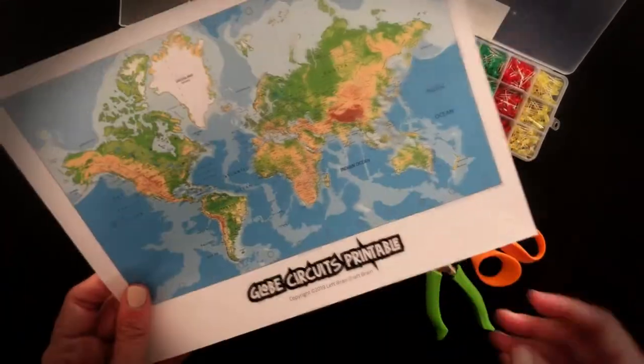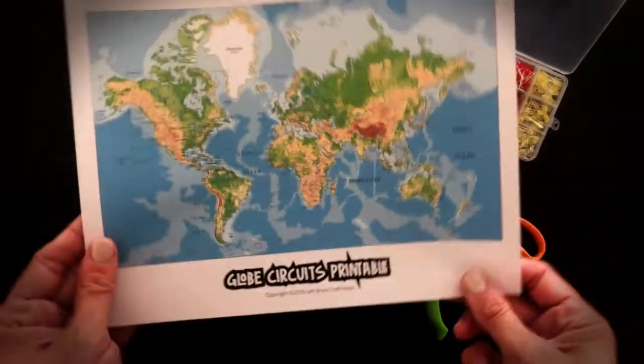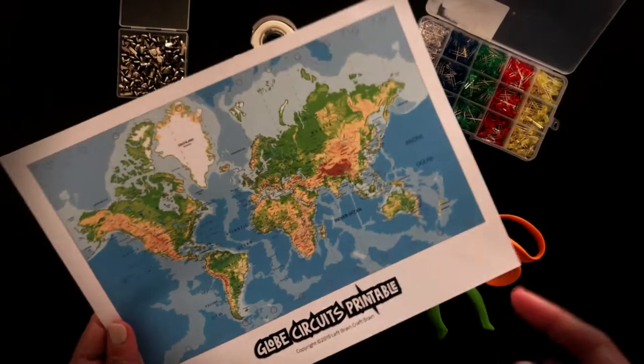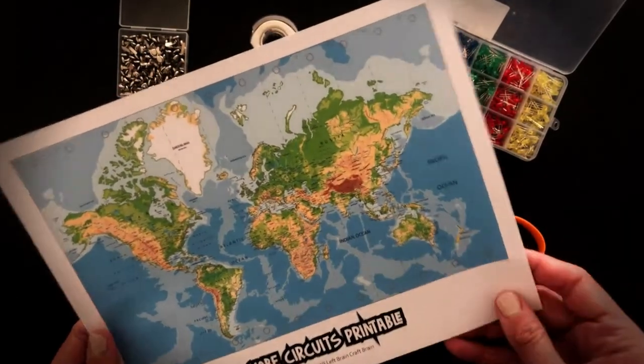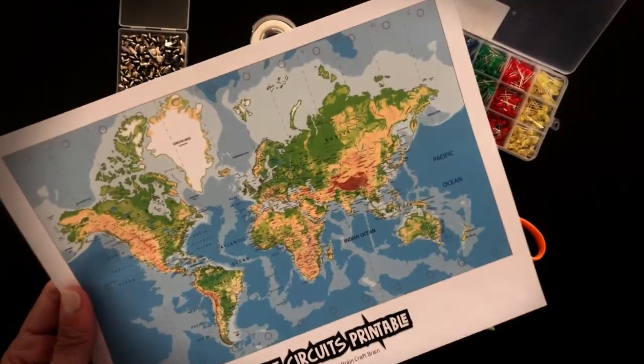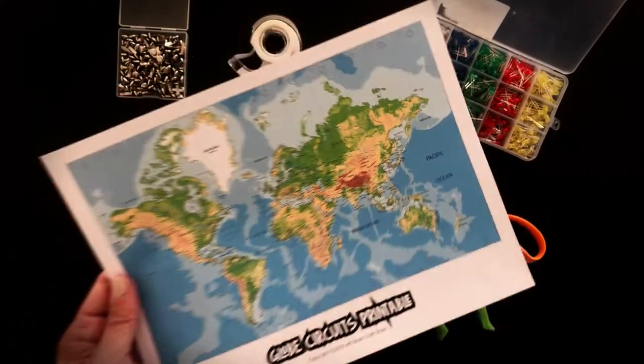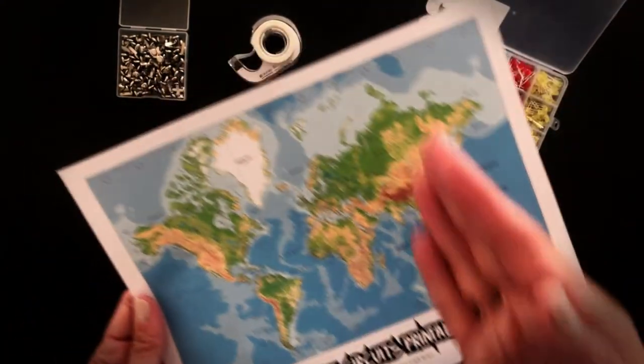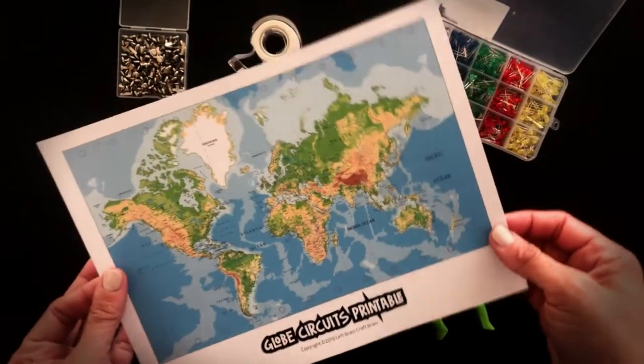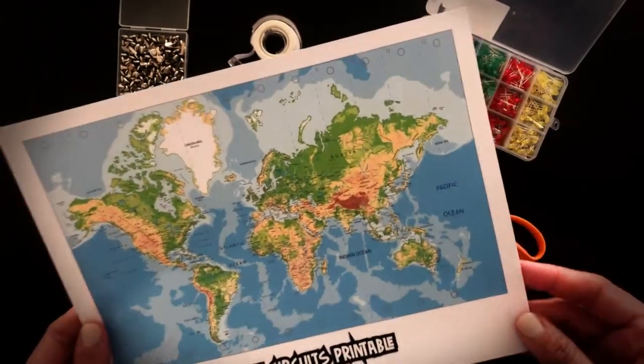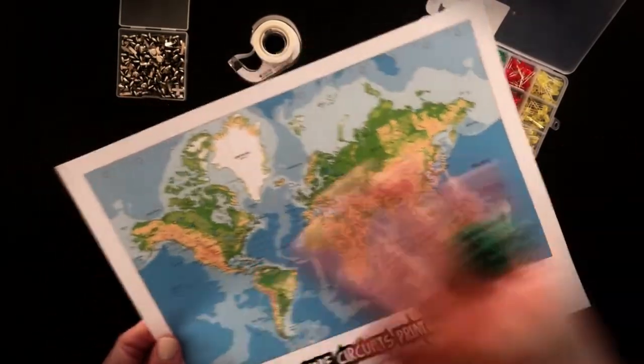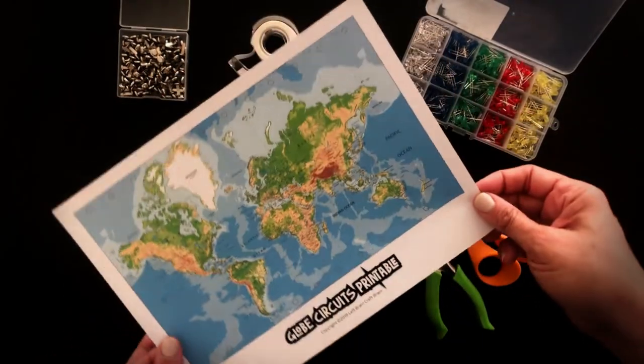Alright, let's get started making these really fun globe circuits. The first thing you're going to need is the template from the STEAM Explorers magazine. What we're going to be doing is we're going to take this flat map and cut it into strips and turn it into a little globe. As you know, it's really hard to turn something flat into something round, so this is the process that we're doing to make that happen.